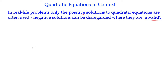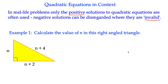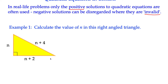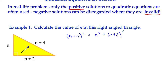So here's an example of a problem. It says: calculate the value of n in this right-angled triangle. We've got three sides and a right angle. According to Pythagoras' theorem, the square of the hypotenuse is equal to the sum of the squares of the other two sides. So we can say that n plus 4 squared — that is the hypotenuse opposite the right angle — is equal to n squared plus n plus 2 squared.